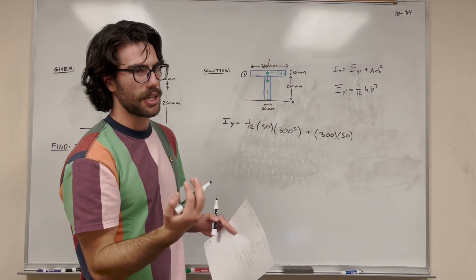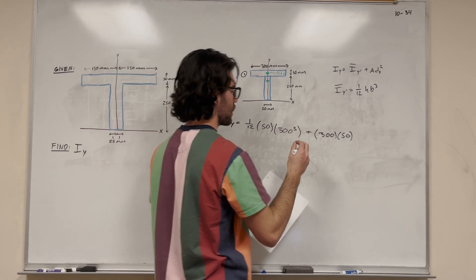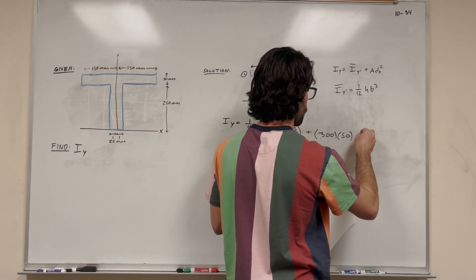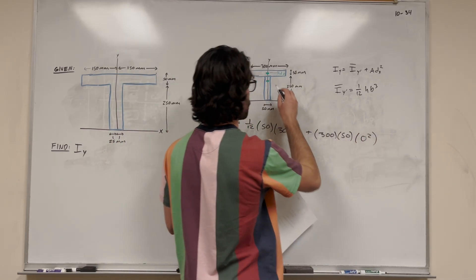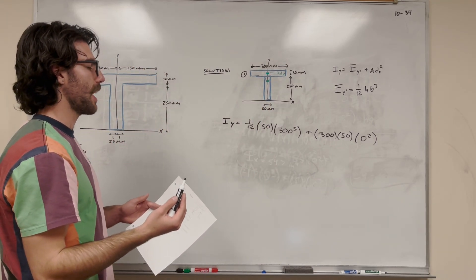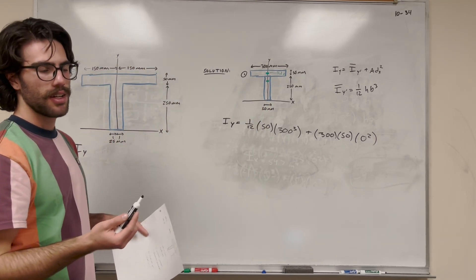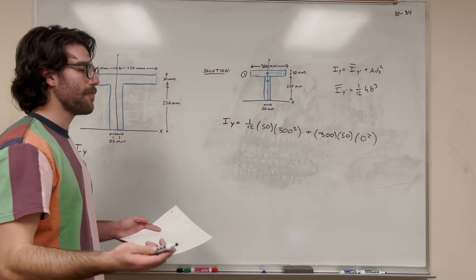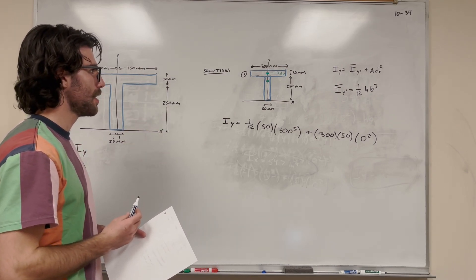They're both at x equals zero. So distance x is just going to be equal to zero squared, because the distance in the x direction from here to here is zero. They're on the same x-axis, basically, or the same value of x is what I'm trying to say.